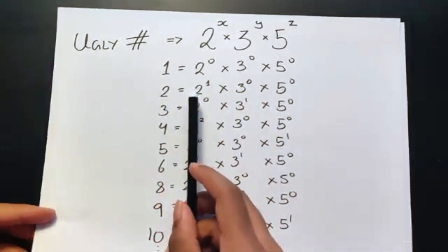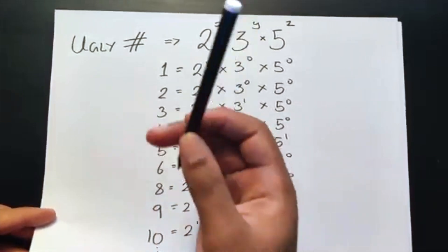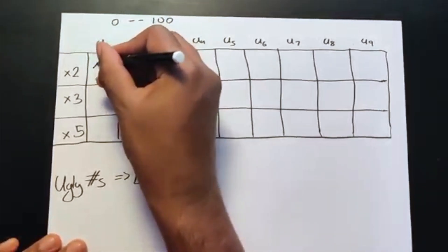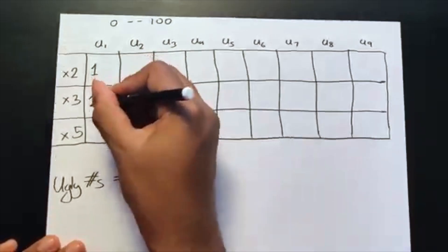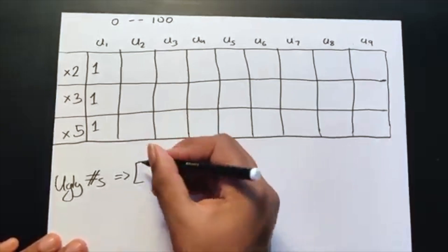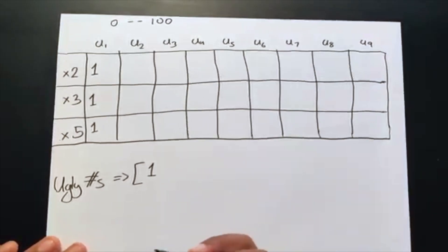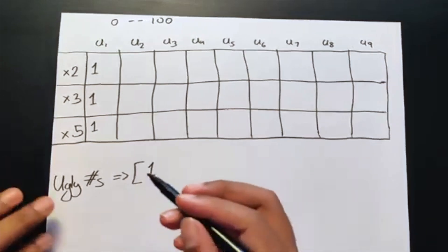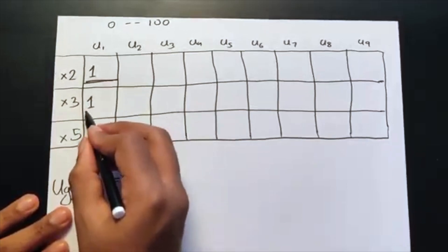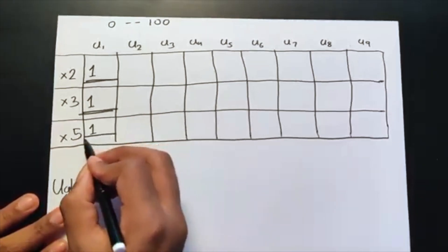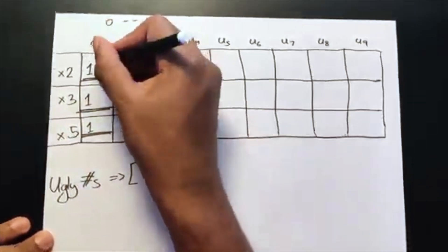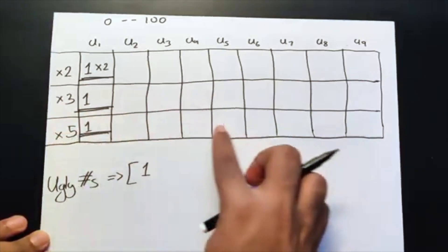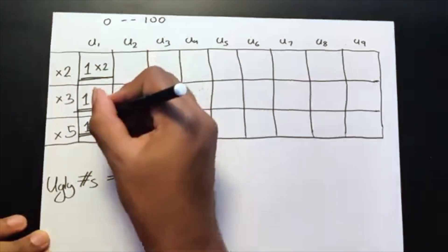The smallest ugly number is 1, so we start with that as U1. We set a pointer at U1 for all three rows. Then we multiply: row one gives 1 times 2 equals 2, row two gives 1 times 3 equals 3, and row three gives 1 times 5 equals 5. Our next ugly number is the smallest of these pointer values, which is 2.